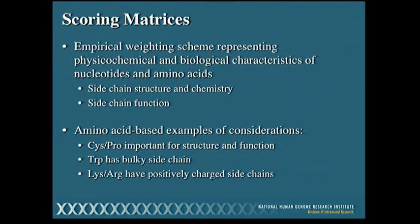We're going to try to find these local regions and align the letters in sequence A and B as best we can. But at some point we need some qualitative measure to tell us how good the alignment is. Beyond percent similarity, there are other metrics available, and to calculate these we use something called scoring matrices — empirical weighting schemes that look at the physicochemical properties and biological characteristics of nucleotides and amino acids, specifically side chains, their chemistries, their function, and their structure.